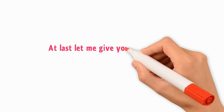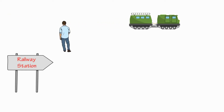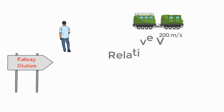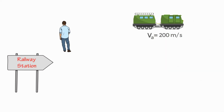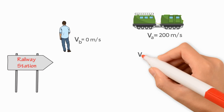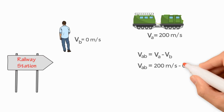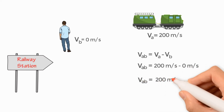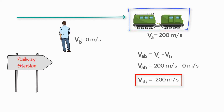Let me give you one more advanced example. If you are standing on a railway station and a train crosses you with a velocity of 200 meters per second, can you find the relative velocity of the train with respect to you? Let the velocity of the train be VA. Since you are stationary, your velocity VB equals 0 meters per second. To find the velocity of the train with respect to you: VAB equals VA minus VB equals 200 minus 0 equals 200 meters per second. This means the train is moving at 200 meters per second with respect to you.